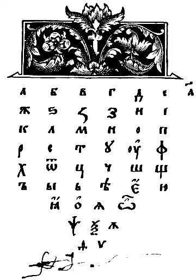Meletiy Smotrytsky's Slavonic grammar of 1619 was very influential on the use of Church Slavonic. Various Russian alphabet reforms were influential as well, especially Peter the Great's Civil Script of 1708, which created a new alphabet specifically for non-religious use and adopted Latin-influenced letterforms for type.